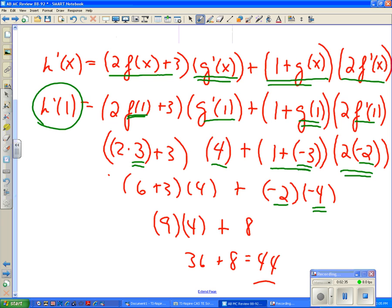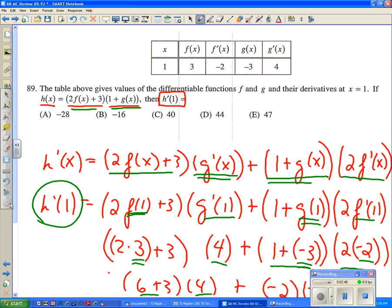1 times negative 3 is, or 1 plus negative 3 is a negative 2. And 2 times a negative 2 is a negative 4. And when we multiply those together, we get an 8, a positive 8. And 9 times 4 is a 36. 36 plus 8 is 44. And when we return back to the top and look at our answer choices, d is it.